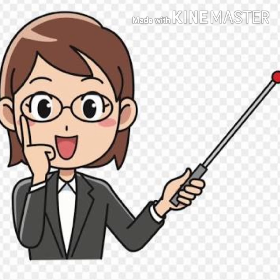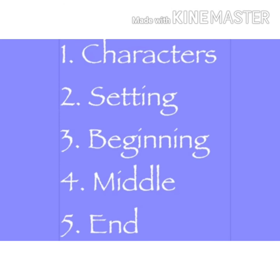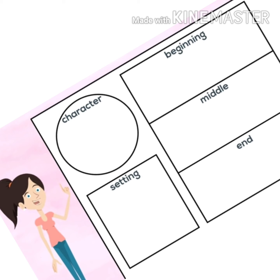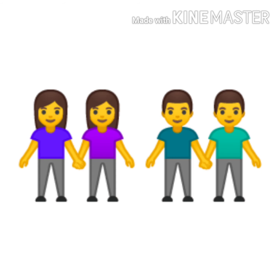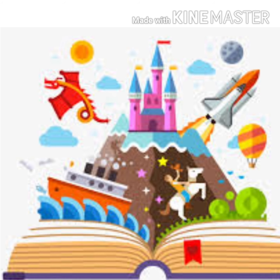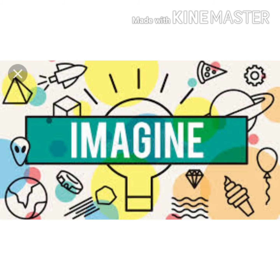So children, in imaginative paragraph writing, keep these things in mind: choose appropriate characters, then settings, and it must have a beginning, middle, and end. The most important thing is that you have to use your own imagination when you write your imaginative paragraph. Your imagination should not match your friend's imagination, because we do not all imagine the same. So think and imagine.